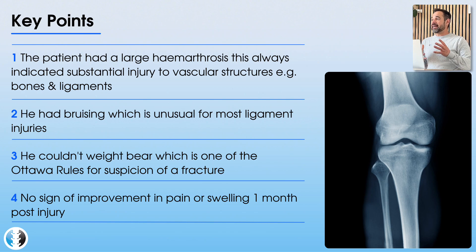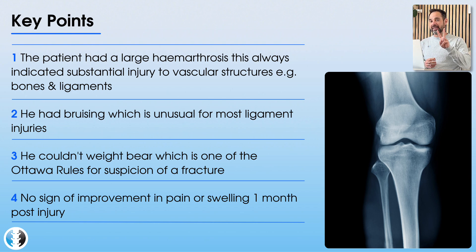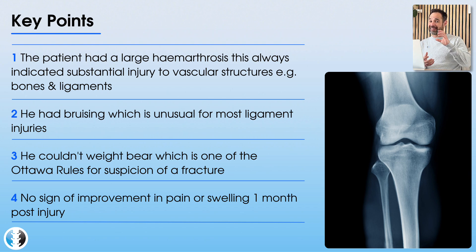First of all, he had a large haemarthrosis — that significant post-injury swelling tells us there's been significant trauma to structures within the leg that have a good blood supply. Within the knee, the two most common causes are a potential fracture, because bones have a really good blood supply, or a ligament injury. The twisting mechanism also makes us think about the anterior cruciate ligament in more detail. So we're thinking bones or ligaments.